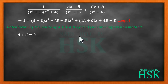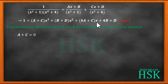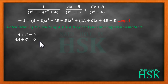Similarly, there is no x term on the left-hand side, so 4a + c = 0. Also b + d = 0, and comparing the constant terms, 4b + d = 1. We mark these as equations 2, 3, 4, and 5.